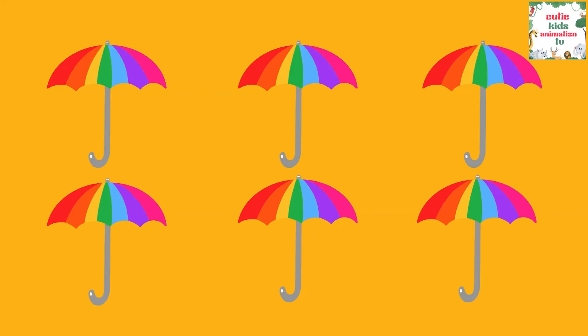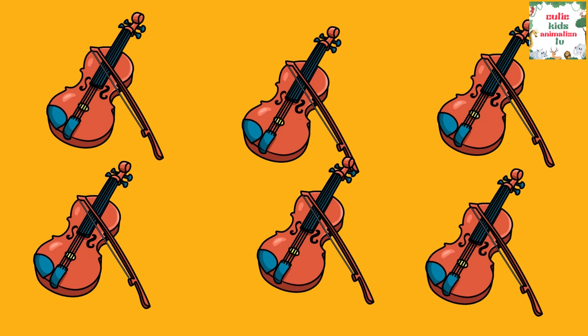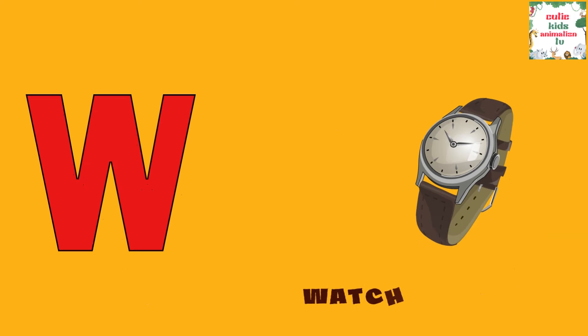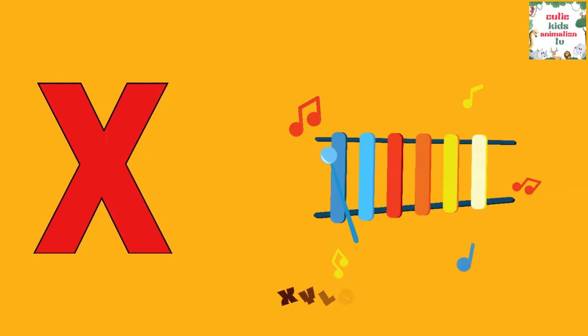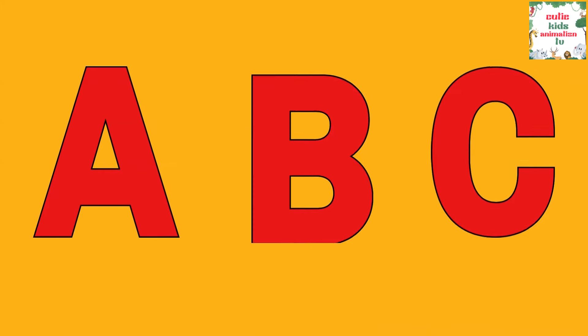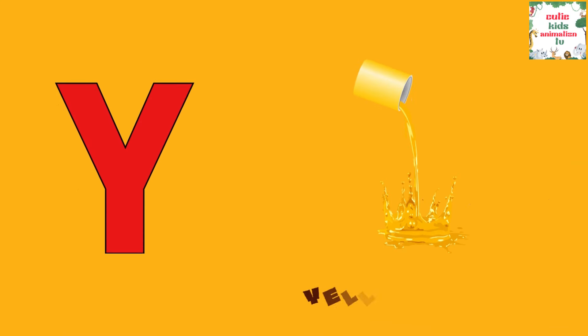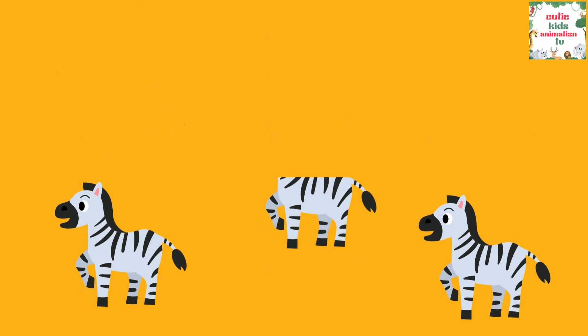U is for Umbrella, U-U-Umbrella. V is for Violin, V-V-Violin. W is for Watch, W-W-Watch. X is for Xylophone, X-X-Xylophone. Y is for Yellow, Y-Y-Yellow. Z is for Zebra, Z-Z-Zebra.